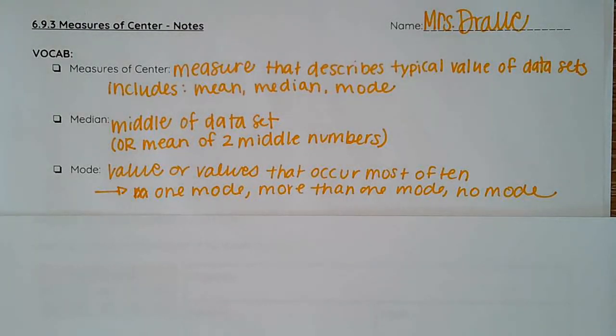Today we are going to talk about finding measures of center. Measures of center are measures that describe the typical value of your data set. This includes your mean, your median, and your mode.